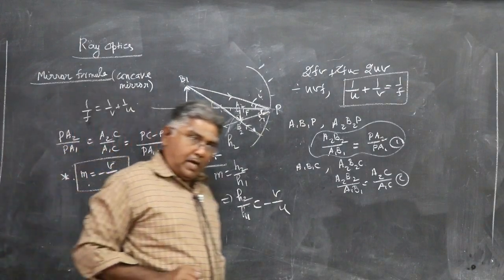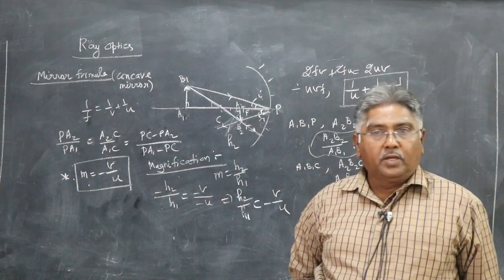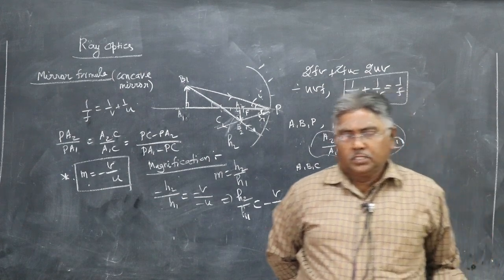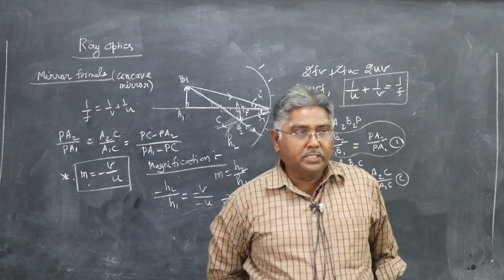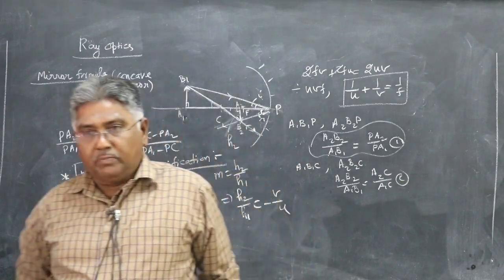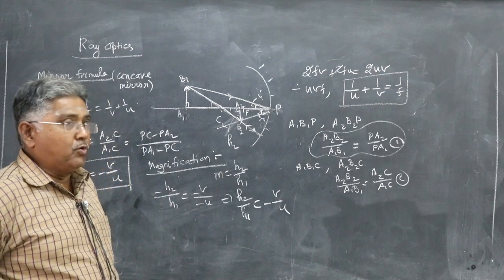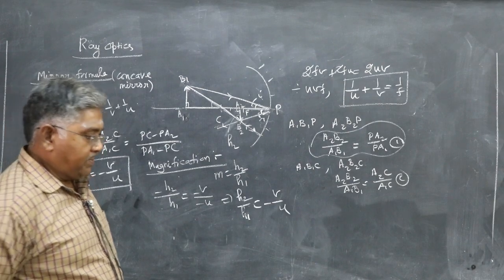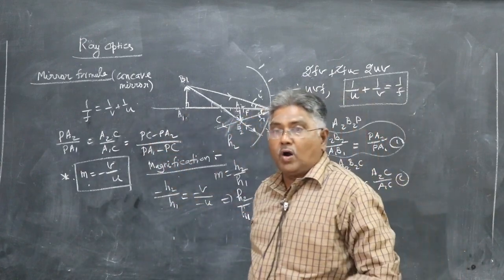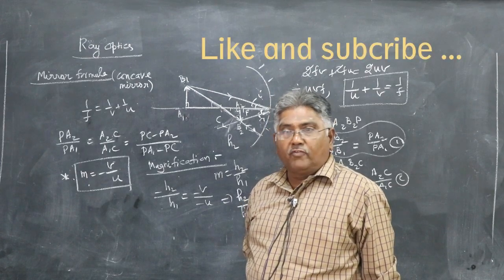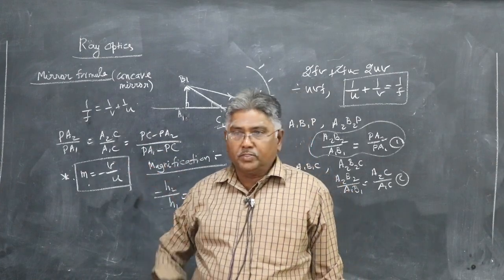We have derived the mirror formula 1/f = 1/v + 1/u, and the expression for magnification m = −v/u. Magnification numerically greater than 1 means an enlarged image; equal to 1 means same size; less than 1 means a diminished image. Negative magnification means an inverted image; positive magnification means an erect image. This derivation assumed a real image being formed. Later we will see how to apply these formulas to solve numerical problems.